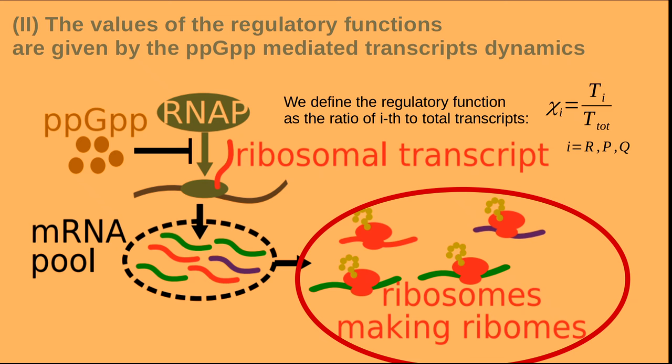The next ingredient is to understand how the value of the regulatory function arises — because we want to know how the ribosome can know how many ribosomes, housekeeping proteins, and constitutive proteins to produce. The fact is that ribosomes do not know the particular ratio; they just randomly attach to mRNA and start transcribing for whatever is coded. Therefore, we propose that the regulatory function — its value — is strictly tied to the composition of the mRNA pool.